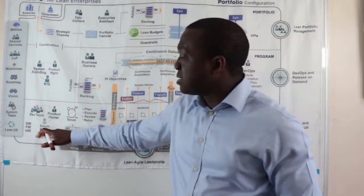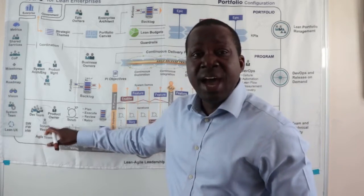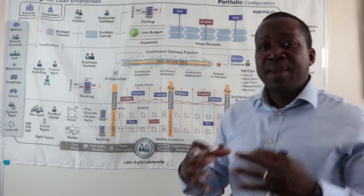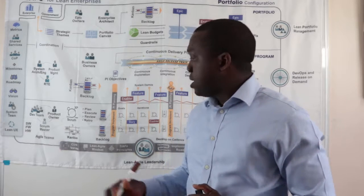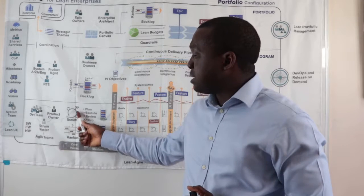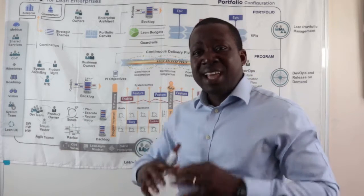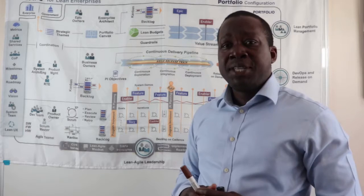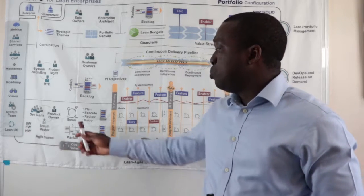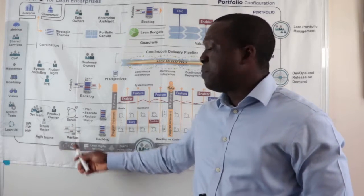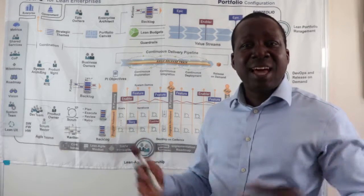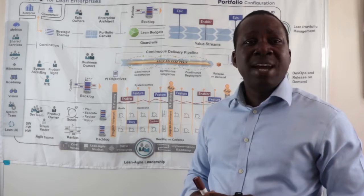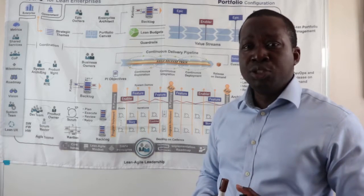We've got the Scrum Master acting as a servant leader and the Product Owner refining the backlog and making sure that the backlog is ready for the team during the PI planning event. The frameworks that exist within the SAFe team include Scrum, XP, Kanban, and the teams will also be acting as DevOps teams using various software languages to build their solutions.